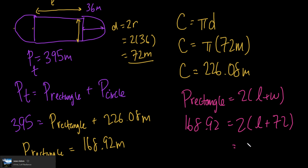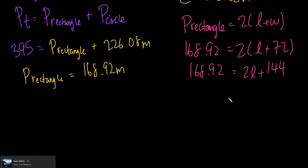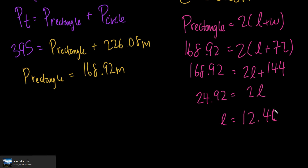We can expand this: 2 × 72 = 144. So 168.92 = 2l + 144. Subtracting 144 from both sides gives 24.92 = 2l, so l = 24.92 ÷ 2 = 12.46 meters. Now we have our length.